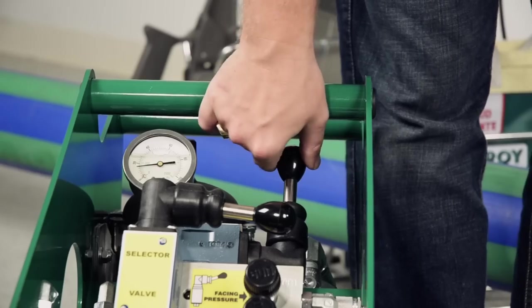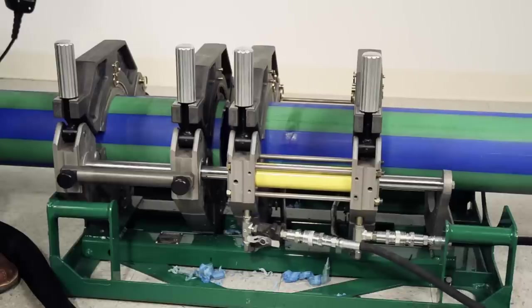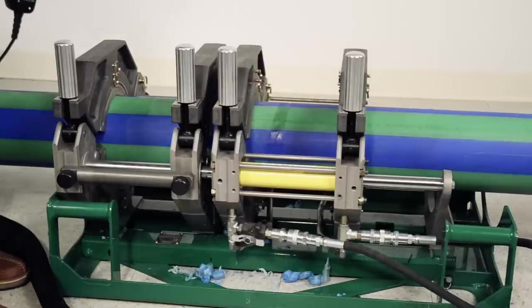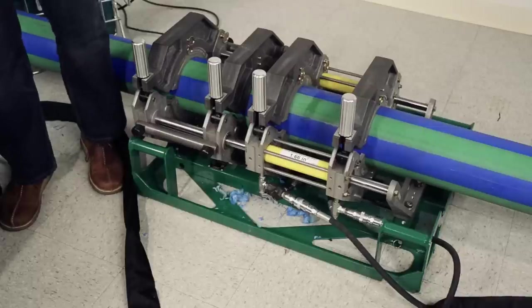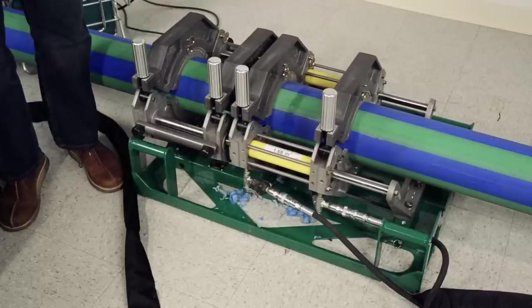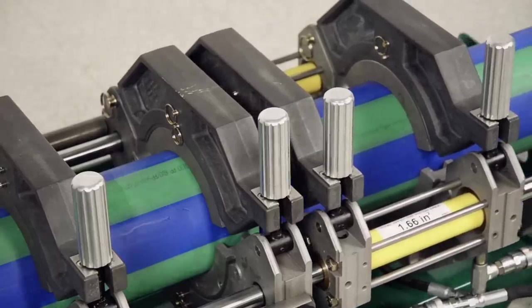Once set, close the carriage and allow the pipe ends to touch. Leave the machine in fusion pressure. Check and make sure that the pipes do not slip in the jaws. If they do, reload the pipe and re-face it.